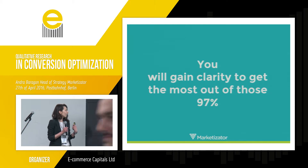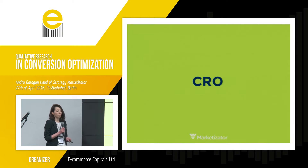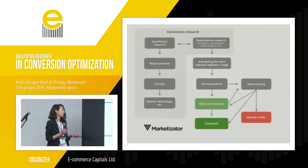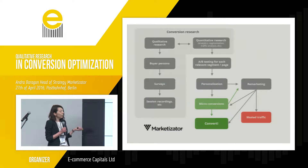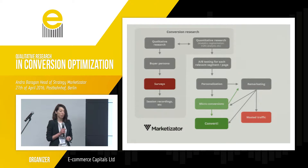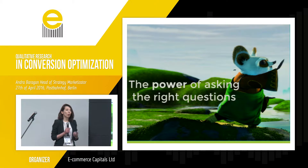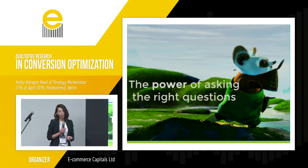The way we take advantage of these 97% is through conversion rate optimization. Conversion rate optimization is a complex process, but it does start with conversion research. We'll be talking today about qualitative research and more specifically about surveys — the way you can use them and apply them to your website. Surveys give you the power to know. It's the power of asking the right questions.